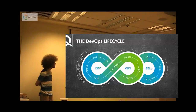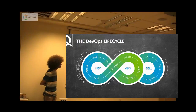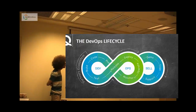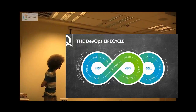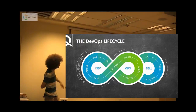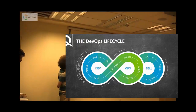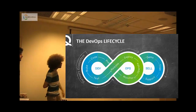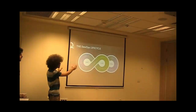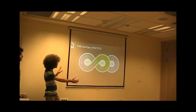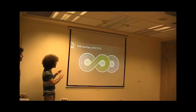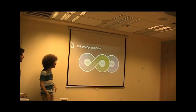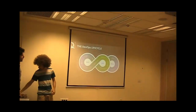This is what we call the DevOps life cycle. We have the coders, the build, the CI, testing, releasing, deployment, and so on. This is what we do in a quick picture.